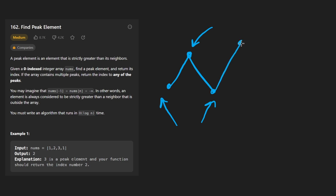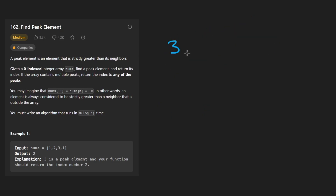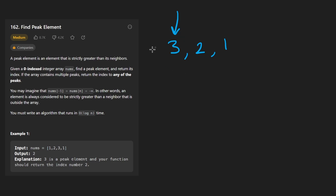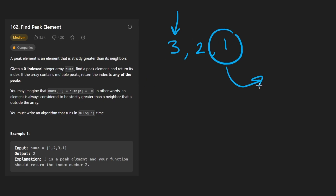It's possible that there could be multiple peak elements — that's okay, we can return any of them. Now, what if our array looks something like 3, 2, 1? At first glance there aren't any peak elements, but the way they define peak elements, endpoint values like 3 are implicitly assumed to be greater than a neighbor that doesn't exist. So 3 is considered greater than its left neighbor, and 1 is assumed greater than its right neighbor — but 1 is not greater than its left neighbor, so it's not a peak. Three, however, is a peak element.